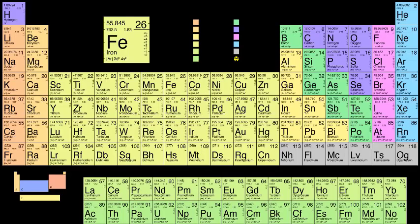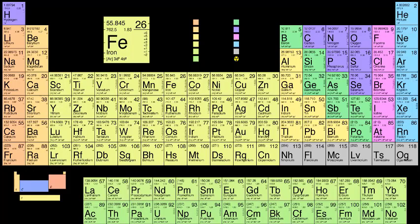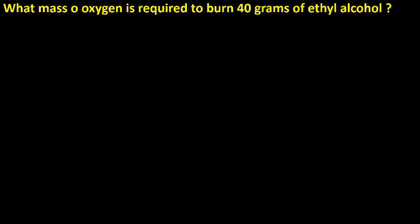Now let us see the periodic table. Sometimes when a problem is given we may need to use exact atomic masses. For example, nitrogen is 14.0067. This information will be given in the problem. However, for calculation purposes we simply use mass numbers — the mass number of nitrogen is taken as 14 — which makes calculations easier.